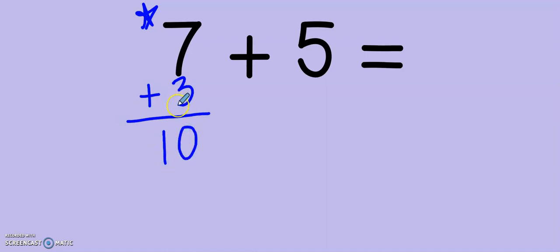Now, if I added 3 to the 7, what do I need to do to the 5? I need to take 3 away. I'm subtracting 3. So, 5, 4, 3, 2. So, my new equation is 10 plus 2. What does 10 plus 2 give me? It gives me 12.